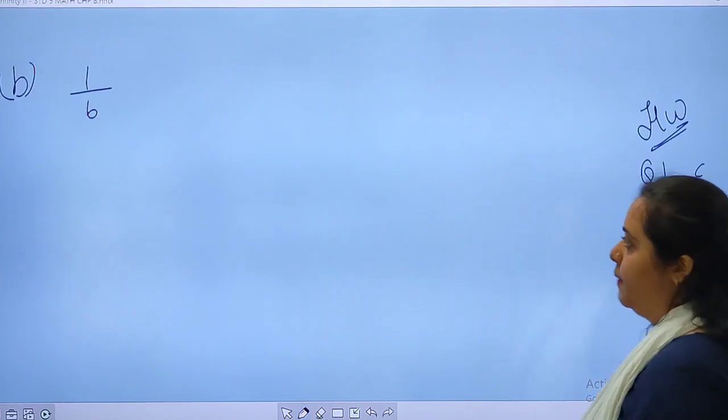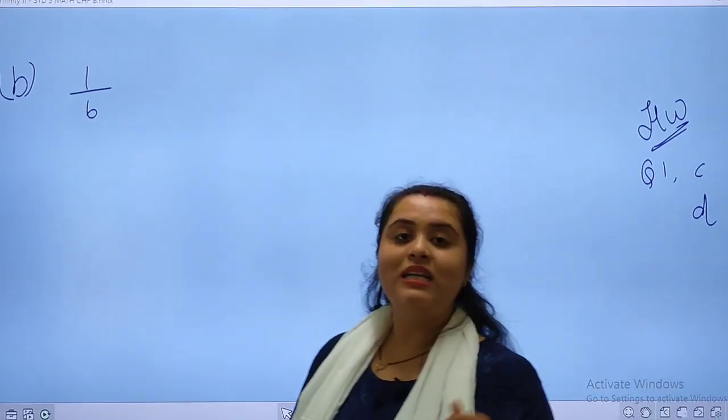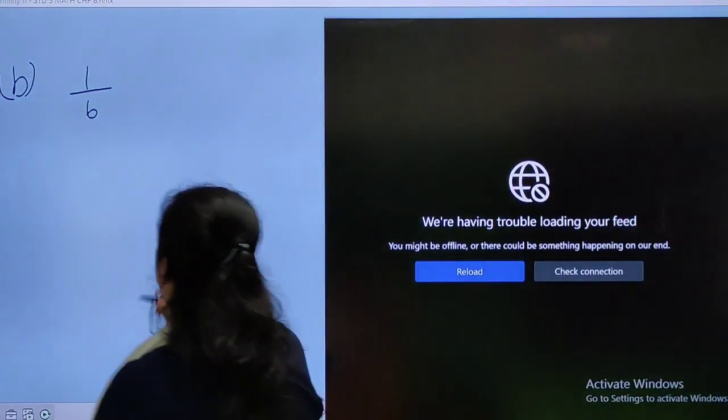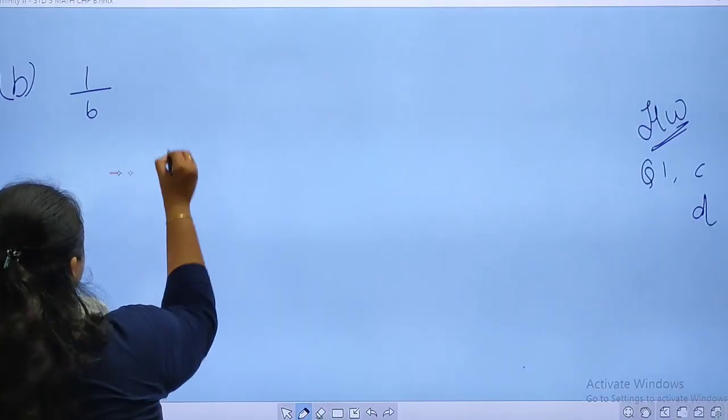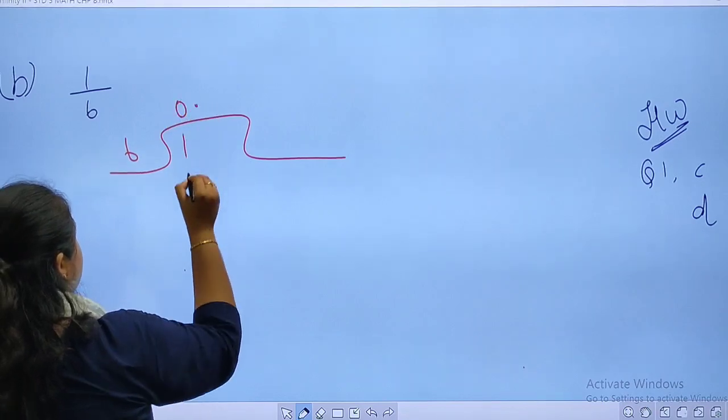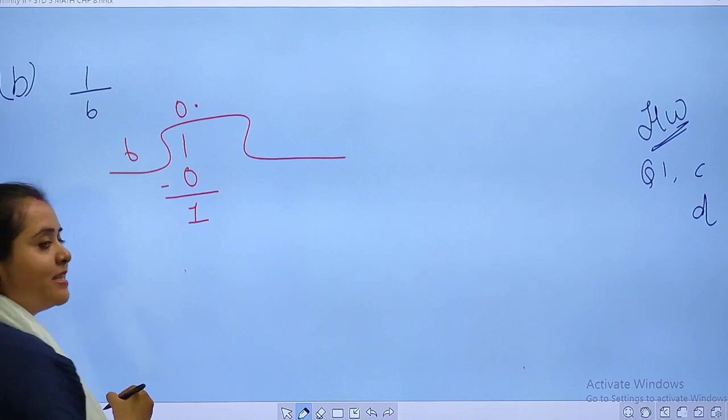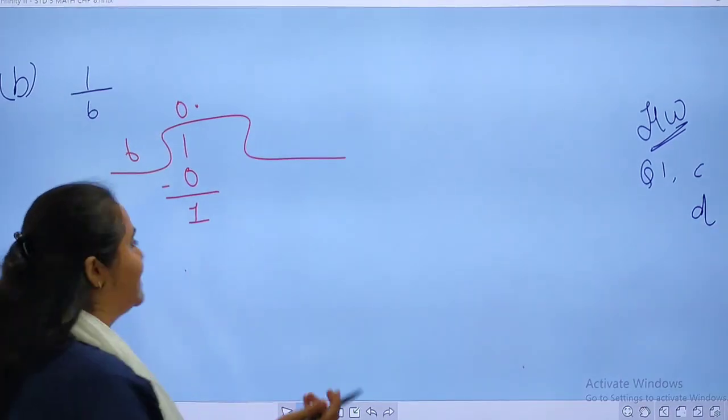Now let's move to part b. Part b is 1 upon 6. Again, we will be dividing it. 6, 1. 6, 0 times is 0. This 1 will be coming down. Decimal here, so I can place 0.